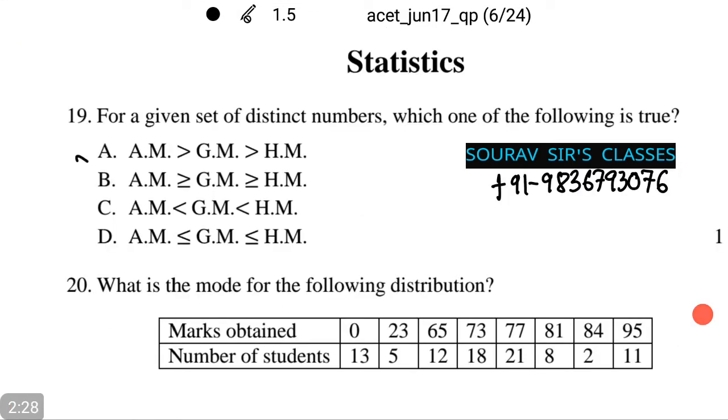Thus, option number A is the correct answer. It is generally known that AM is greater than or equal to GM is greater than or equal to HM, which is option number B. But I will tell you why this option is not correct. In fact, the three means are equal only when the numbers are equal, but they are said to be distinct. Hence, we cannot take option number B as the correct answer.